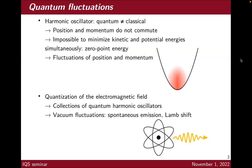When you hear about quantum vacuum fluctuations, the first thing that comes to mind is the harmonic oscillator and how the quantum case is different from the classical case. The main reason for that, as everybody knows, is that in quantum mechanics, position and momentum do not commute. For the harmonic oscillator, it means that you cannot minimize at the same time the kinetic and potential energies. That's what gives rise to what's called the zero-point energy — the fact that in the ground state, the harmonic oscillator still has some energy, contrary to the classical case where the minimum energy is zero. Position and momentum will fluctuate in this ground state; on average it's zero, but you still have fluctuations.